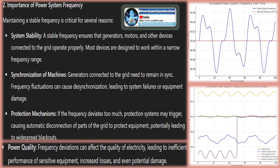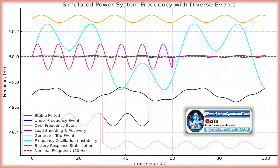Frequency refers to how often something occurs within a specific period. When you power up an appliance like a kettle or laptop charger, it uses alternating current AC, which means the current alternates between positive and negative voltage. This back-and-forth movement, or oscillation, is termed electrical frequency. AC oscillates 50 times per second, resulting in a frequency of 50 Hertz.